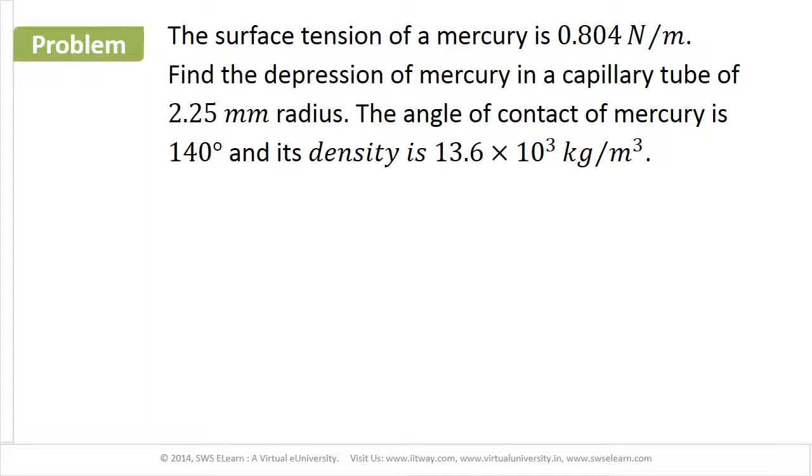The surface tension of mercury is 0.804 N per meter. Find the depression of mercury in a capillary tube of 2.25 mm radius. The angle of contact of mercury is 140 degrees and its density is 13.6 × 10³ kg per meter cubed.